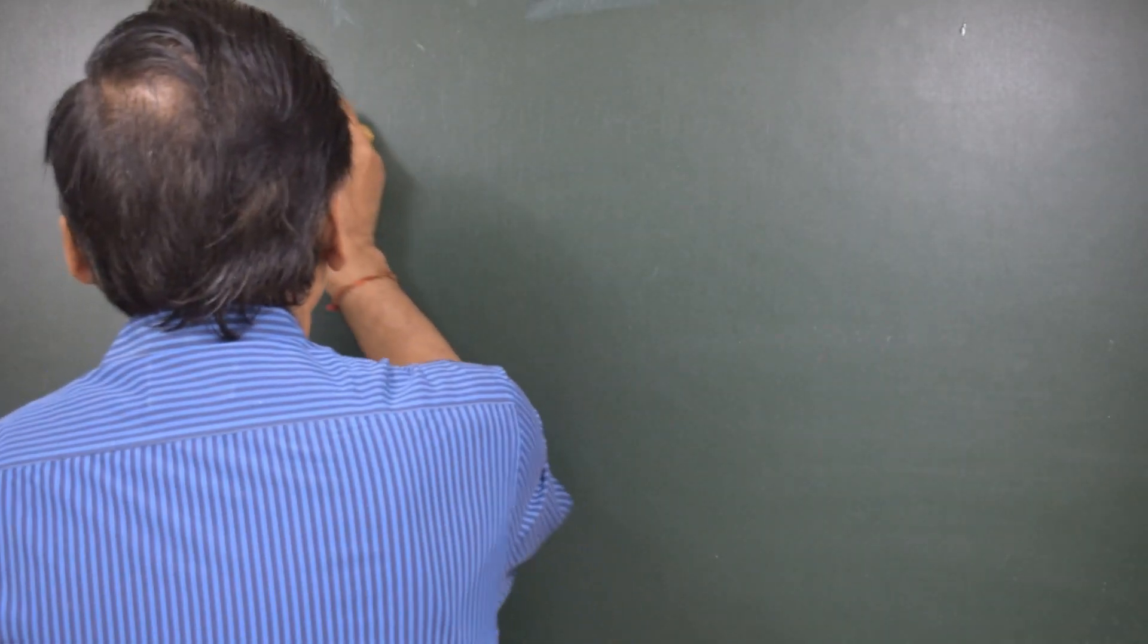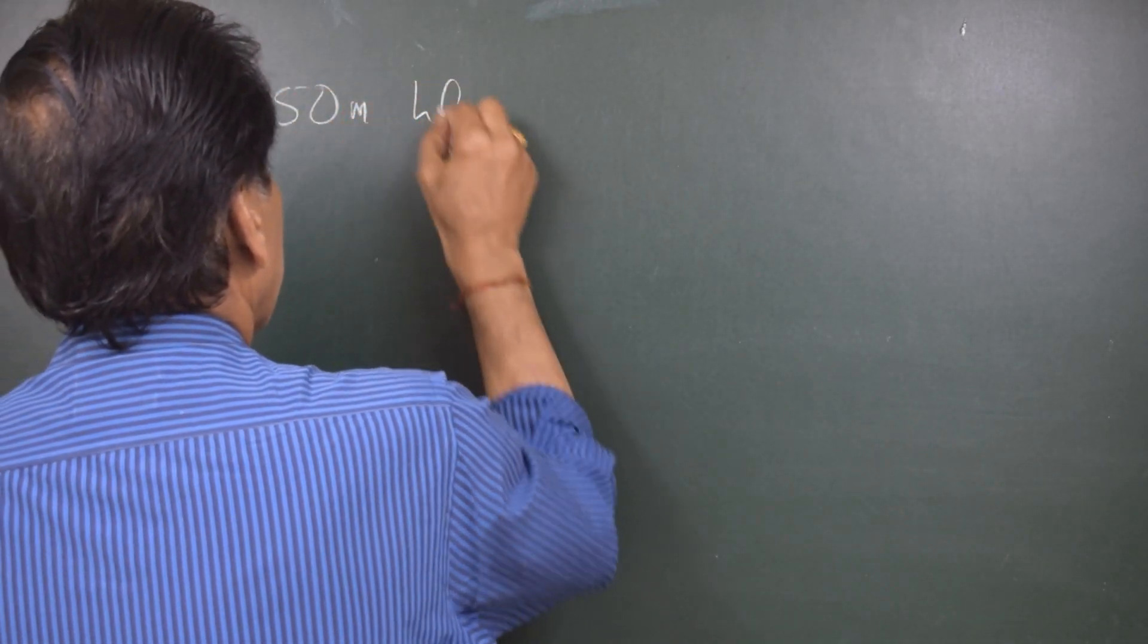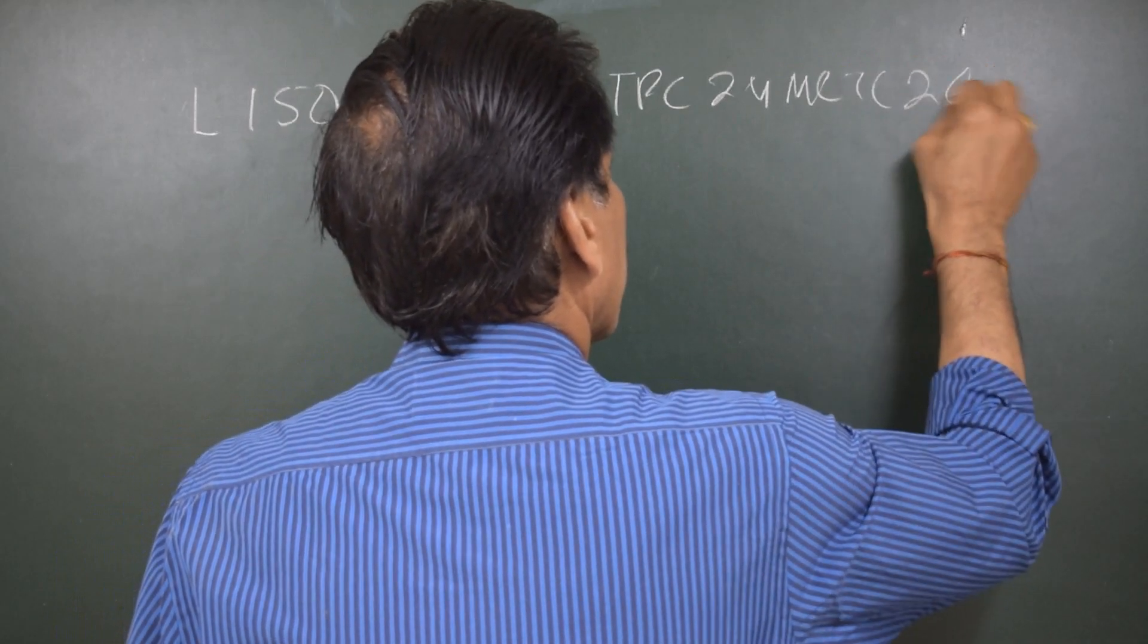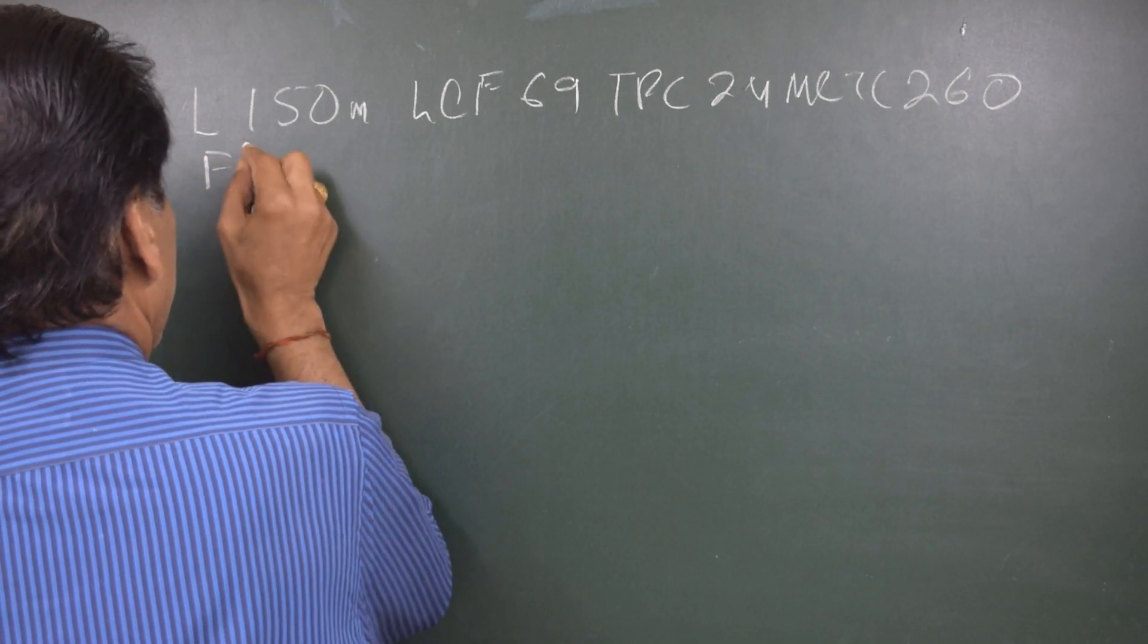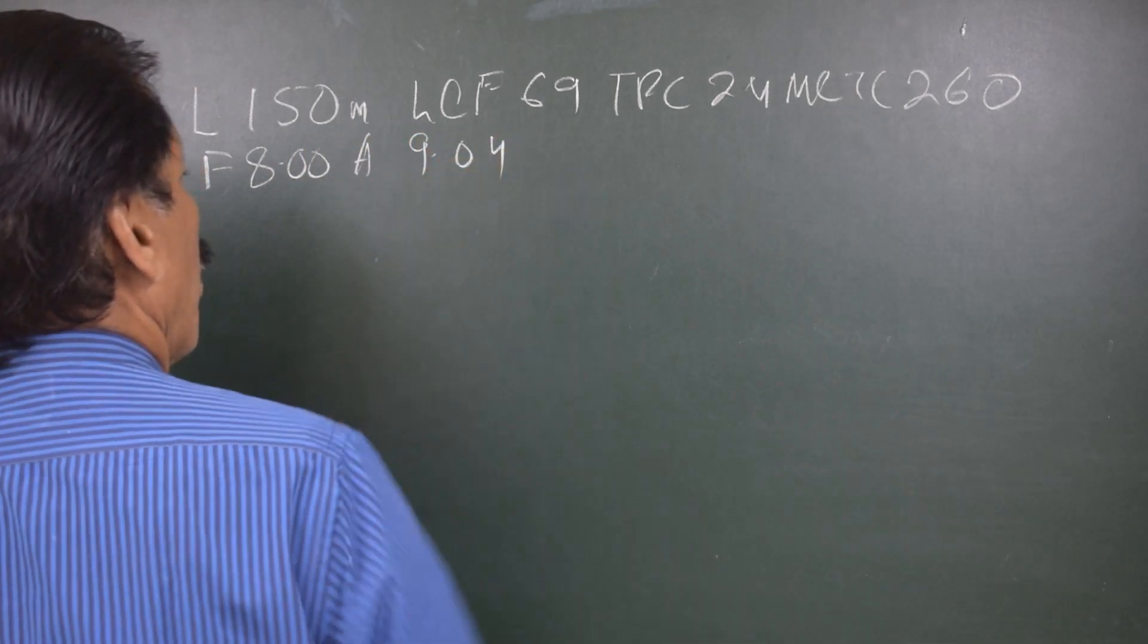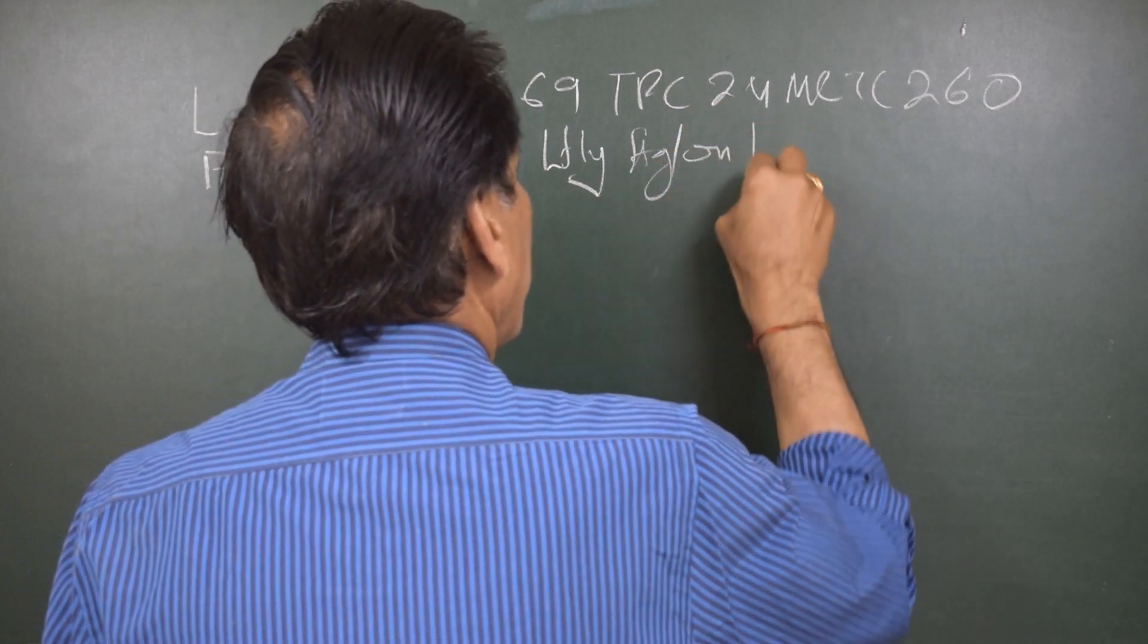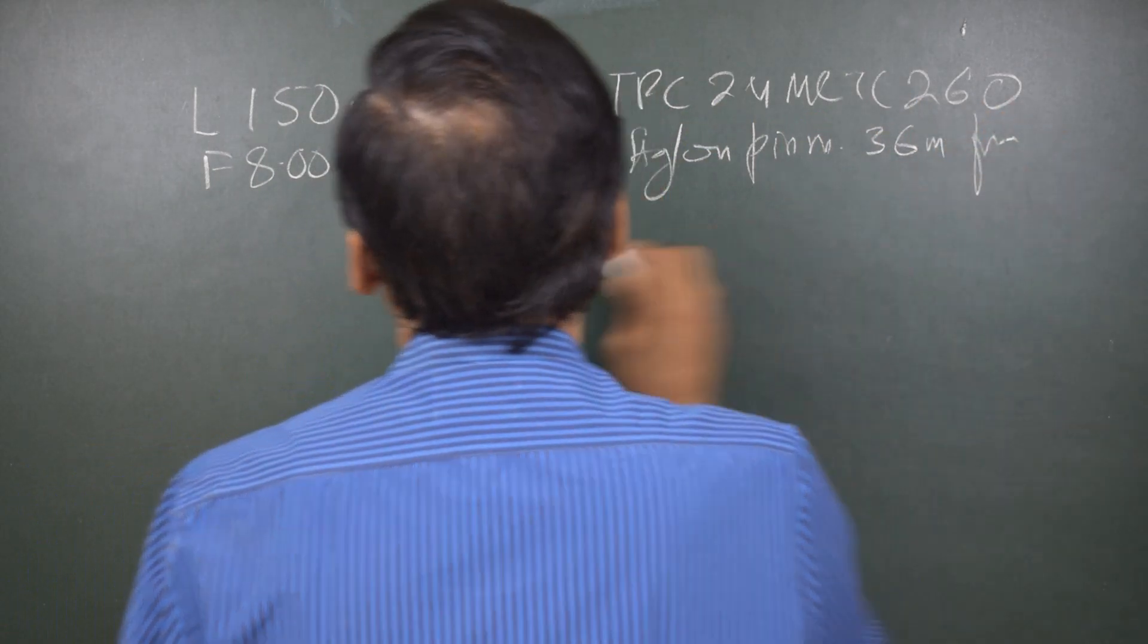Coming back to the calculations, let's see. There is a ship length 150 meters, LCF 69, TPC 24, MCTC 260. This ship is on a forward draft 8.00, aft 9.04, and the ship is lightly aground on a pinnacle 36 meters from forward.